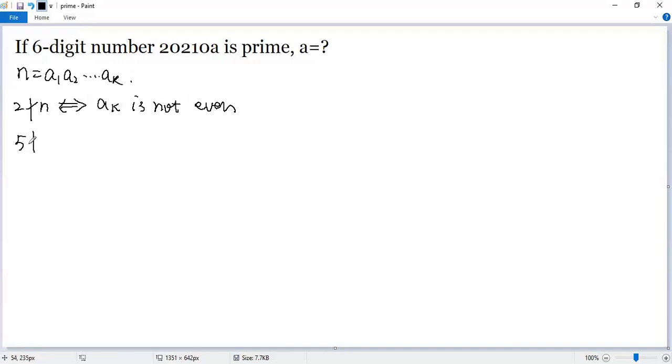5 is not a factor of N if and only if AK is not equal to 0 and 5.